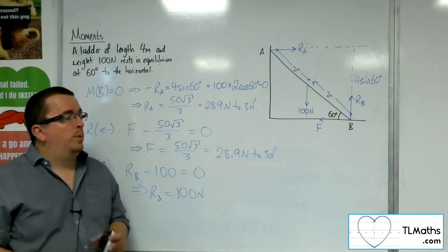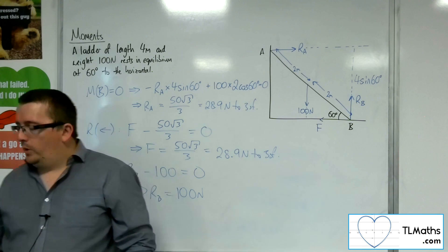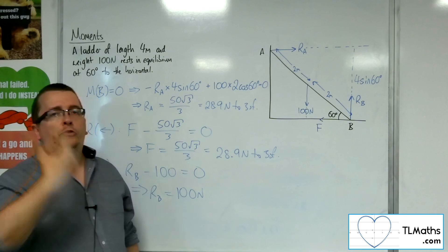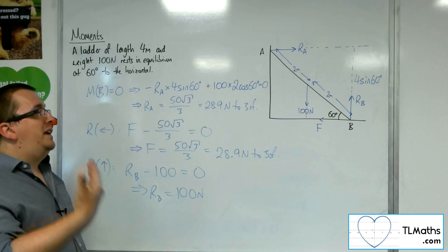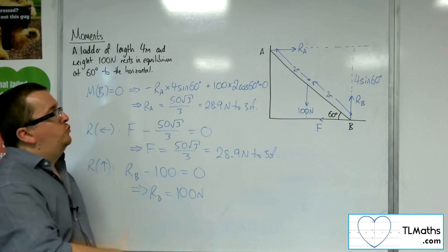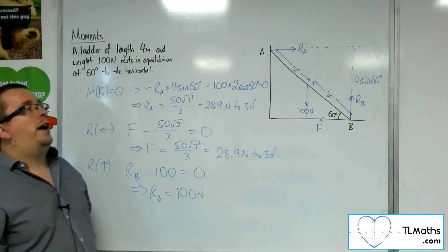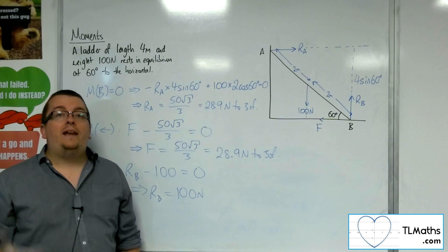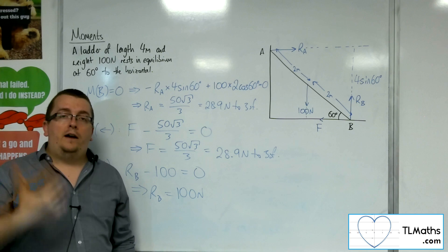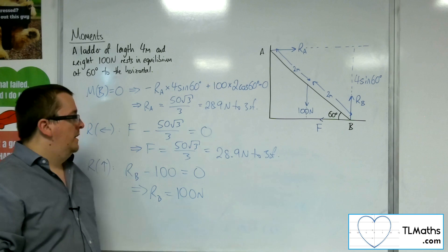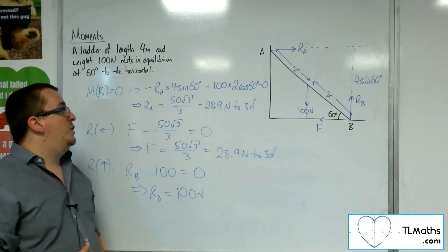So how are we going to complicate this problem? Well, we complicate it by thinking about particles being put onto the ladder, or somebody climbing up the ladder, and trying to figure out how far up the ladder they would be in order to maintain equilibrium. So those are the types of problems that we're going to have to deal with, and we're going to see a few of those in the coming videos.